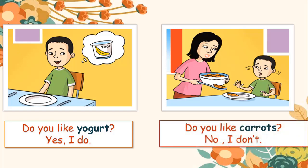Next, number two: Do you like carrots? No, I don't. In picture two, the boy looks unhappy when given carrots, showing he doesn't like them. So when asked 'Do you like carrots?' he answered 'No, I don't.' Now repeat: Do you like carrots? No, I don't.